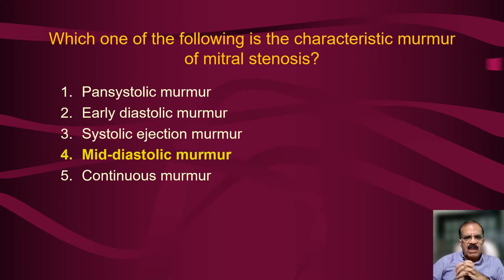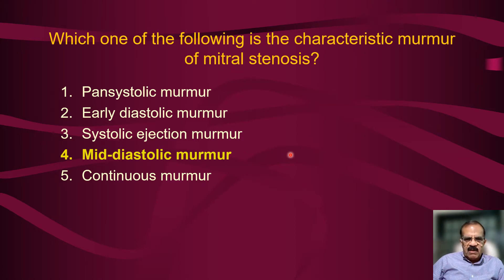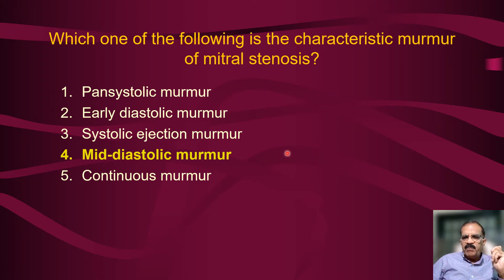In the most typical case, there would be a mid-diastolic murmur with pre-systolic accentuation — meaning toward the end of diastole, just before the next systole, the murmur increases in intensity. This is because the pressure gradient between the left atrium and left ventricle increases due to left atrial contraction, which occurs just at the end of diastole. If there is no left atrial contraction — as happens in atrial fibrillation, a common complication of mitral stenosis — that pre-systolic accentuation disappears. So classically: mid-diastolic murmur with pre-systolic accentuation; in atrial fibrillation, just a mid-diastolic murmur.